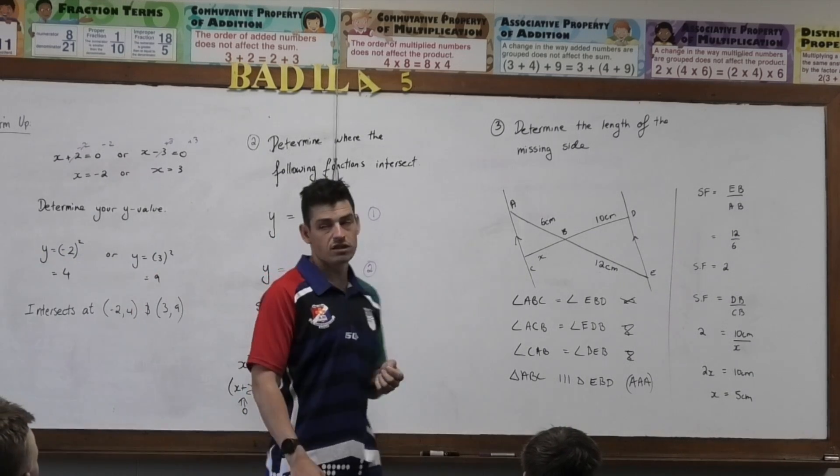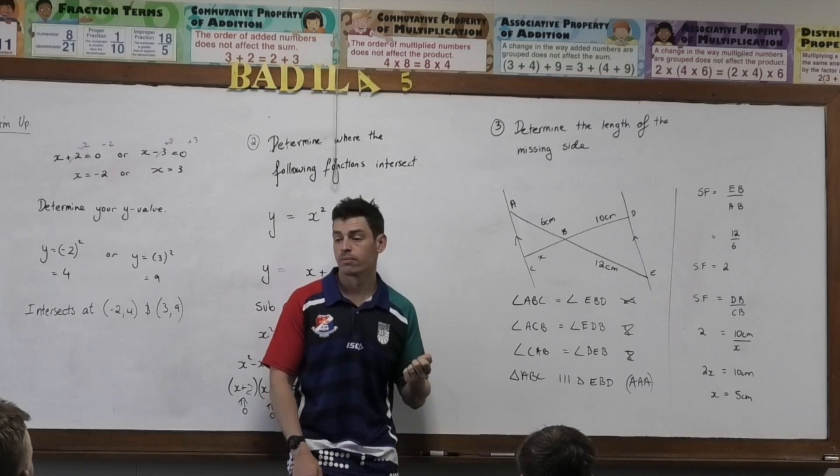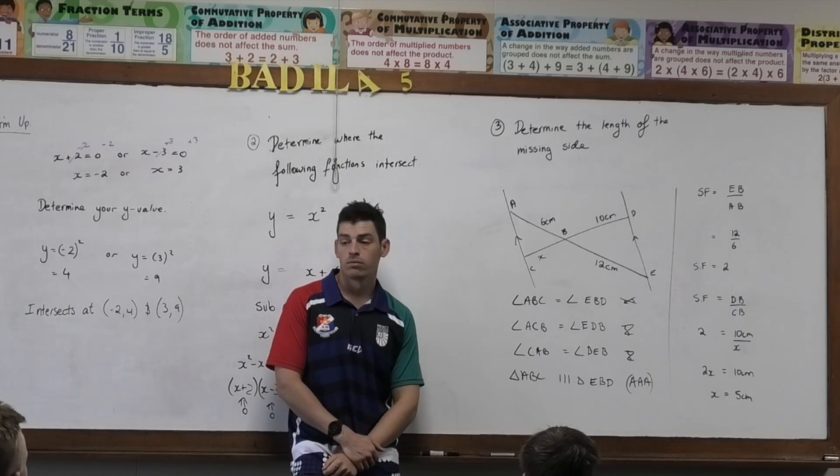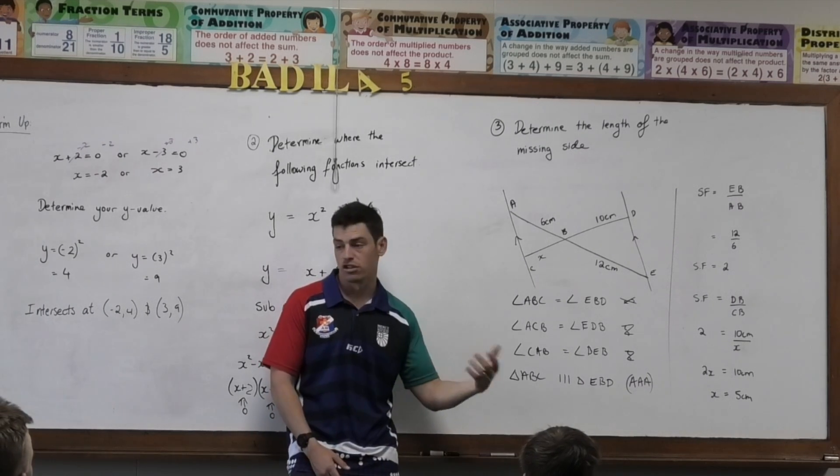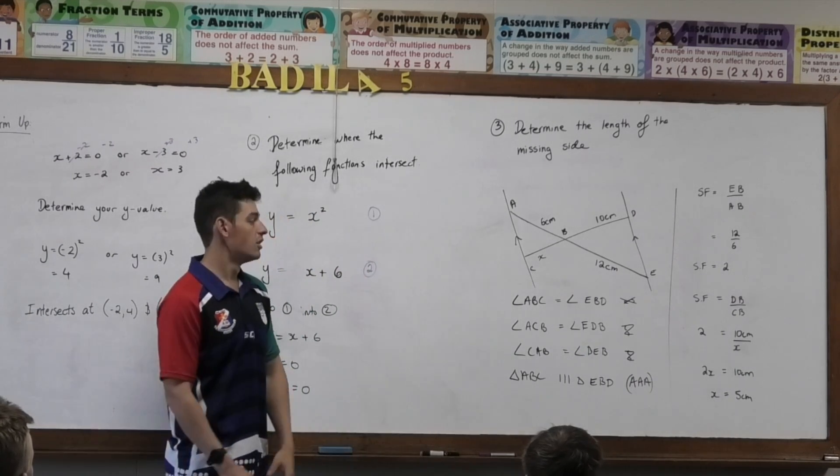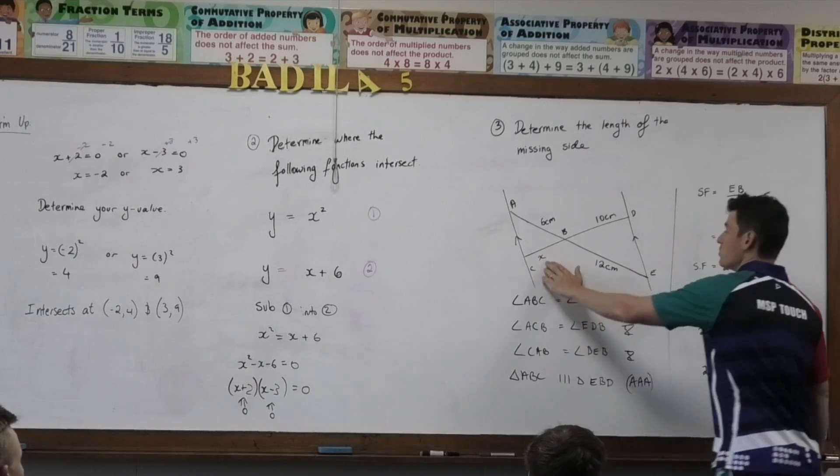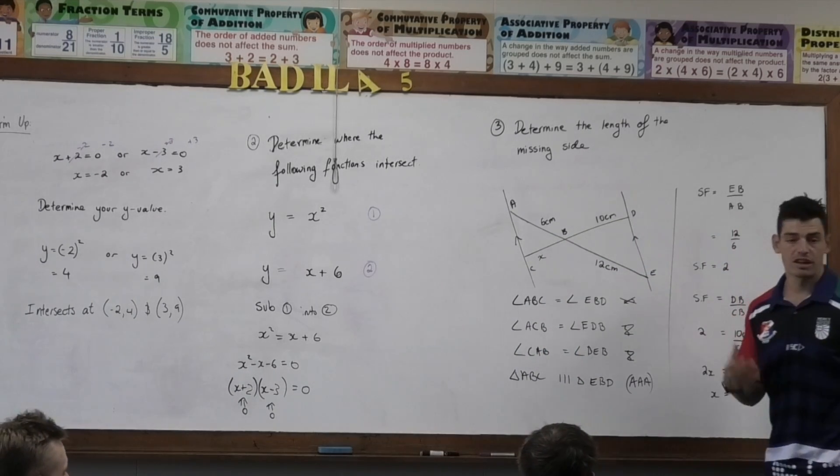Because this question really isn't about you identifying a pattern, what's it about? Proving that it's similar, and then using your understanding of similar triangles. But most of the work is proving that it's similar. So, I've presented you with a question you need to try and identify what the missing side is, but to do that, you first have to.